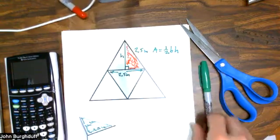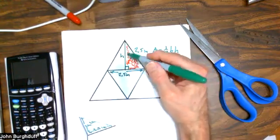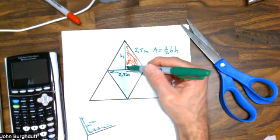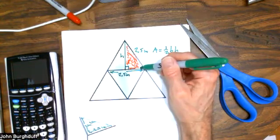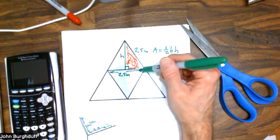If I can use the Pythagorean theorem, I believe I can find H as long as I can figure out this side, which I know, and this side, which I can figure out.